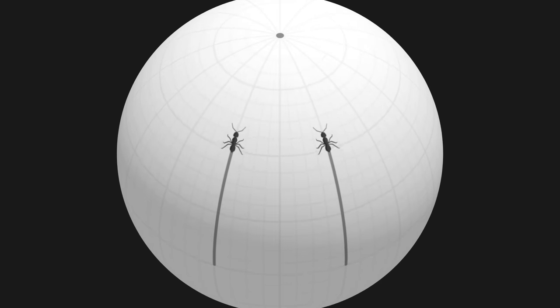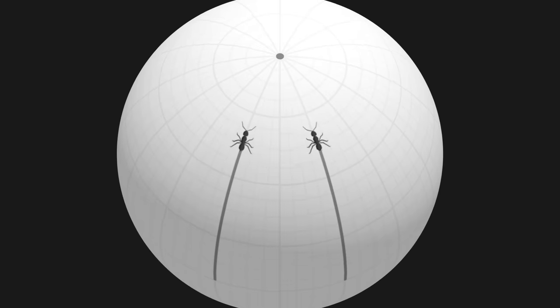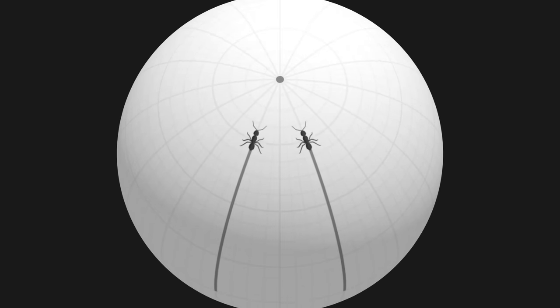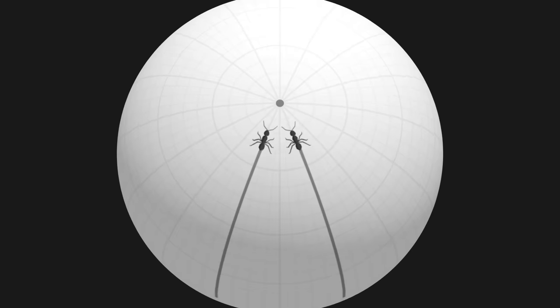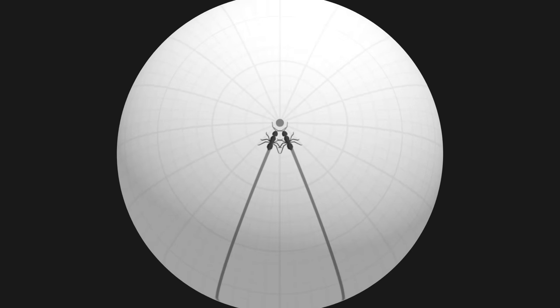However, the two ants end up meeting at the North Pole. This is possible thanks to the curved geometry of the sphere, on which straight lines tend to get closer to one another.